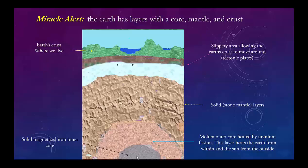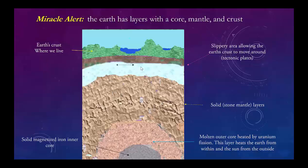The iron core is important because it's magnetized by the sun, creating a magnetic field around it which helps avoid getting hit by too many asteroids. Next to it is a molten layer which undergoes nuclear fission with uranium as the primary fuel, creating an immense amount of heat. This heat heats the center of the Earth, while the sun heats the top. That keeps the temperature of the Earth habitable — we're at a habitable distance and temperature for most of the planet, except the polar areas.